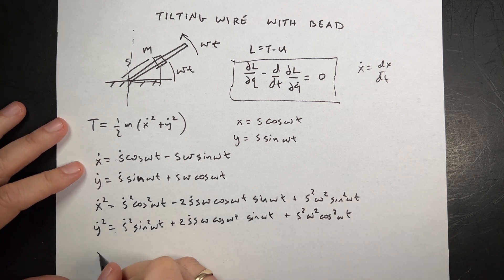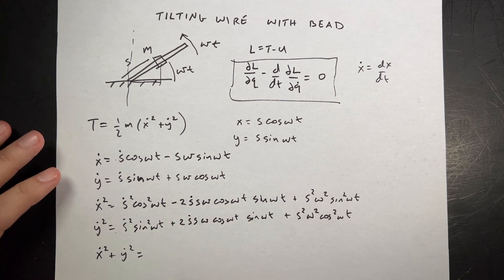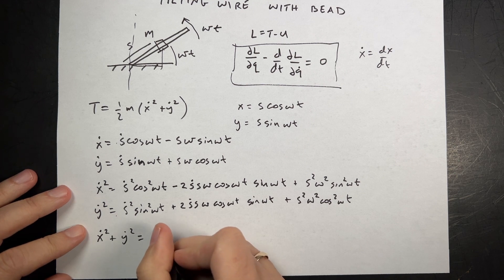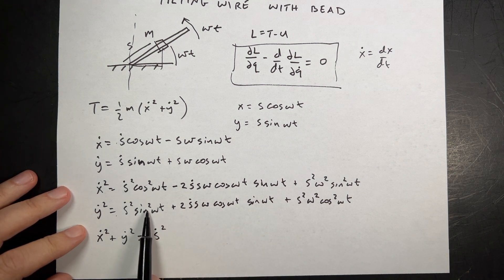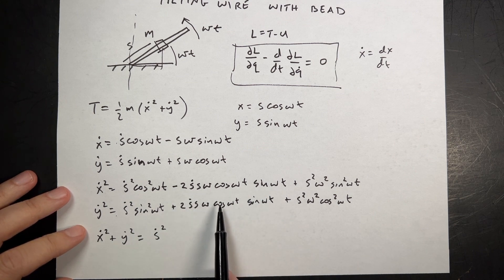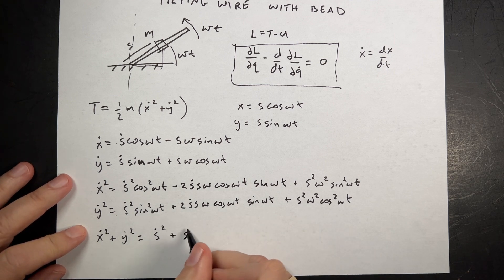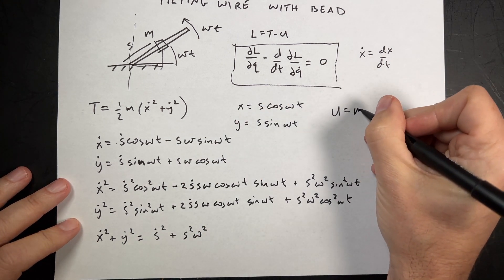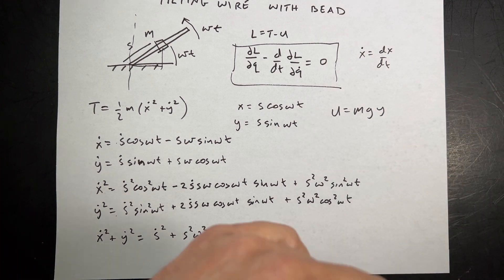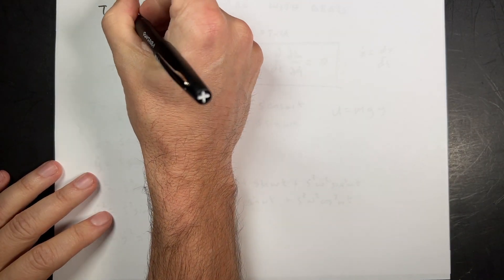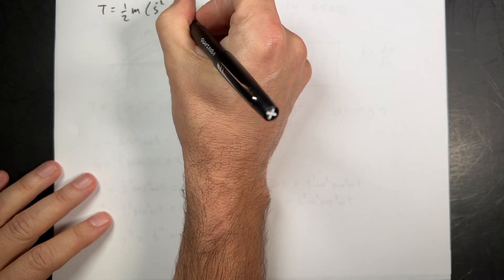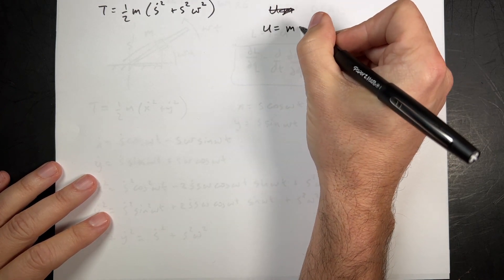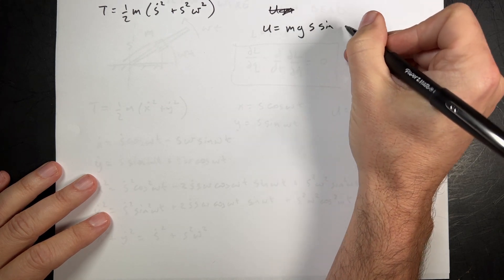And then I'm going to get this squared. So I get plus S squared omega squared sine squared omega t. Now let's do it for y dot squared. Y dot squared is going to be S dot squared sine squared omega t. Now I'm going to get a cross term. So I'm going to get plus two S dot S omega cosine omega t sine omega t. And then I get S squared omega squared cosine squared omega t. Okay. Now when I add these two together it's not so bad.